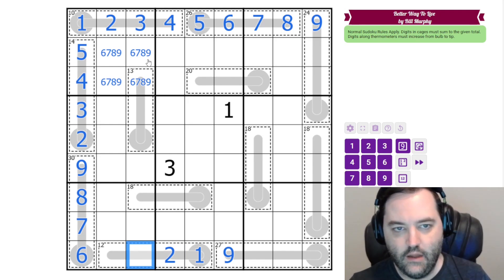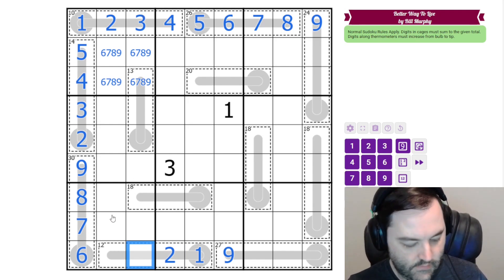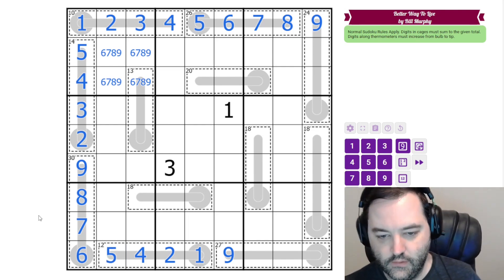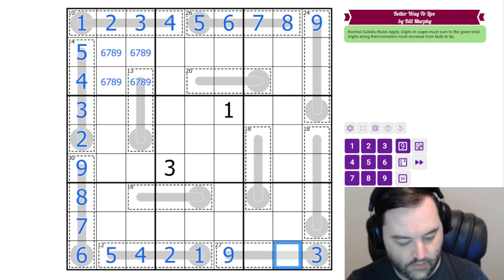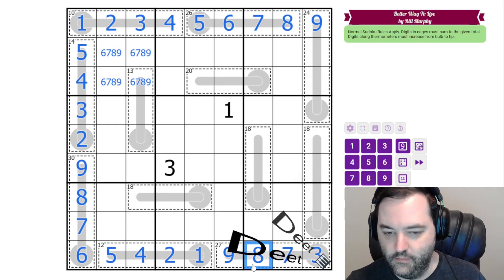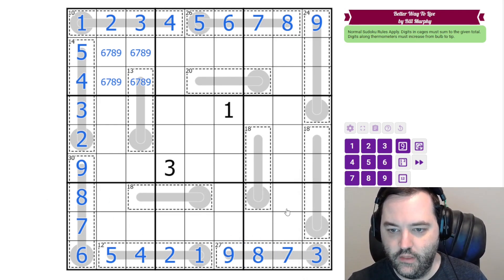And now this can't be three because of the top cage, so this is four, five to complete the cage, and now we know what these are. These are three, seven, eight, nine, and that does sum to 27, and check that.